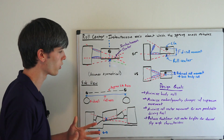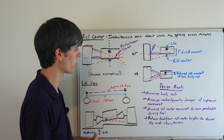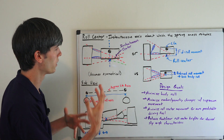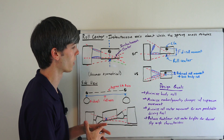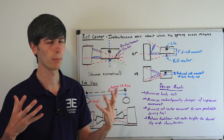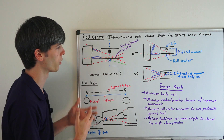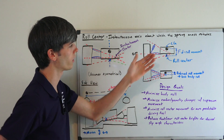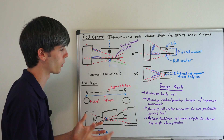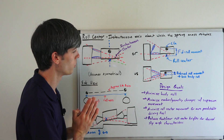So what are your design goals when creating a vehicle with the roll center in mind? You want to minimize body roll, and in order to do that you want to keep your center of gravity and your roll center as close together as possible.